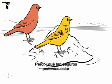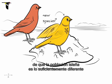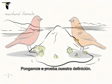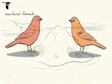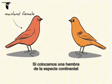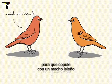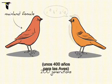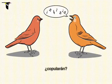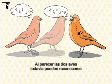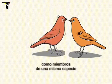But at what point are we confident that this island population has really changed enough to become a new species? Let's put our definition to the test. If we introduce a female from the mainland species to a potential mate from the island after 200 generations in isolation — about 400 years in bird terms — will they mate? It appears that these two still recognize each other as members of the same species.